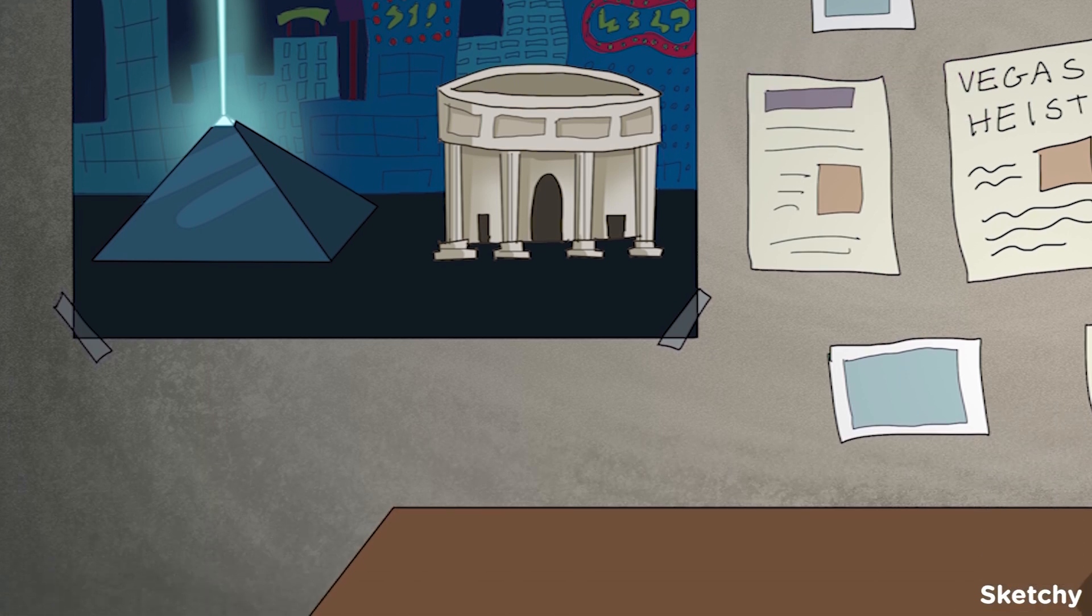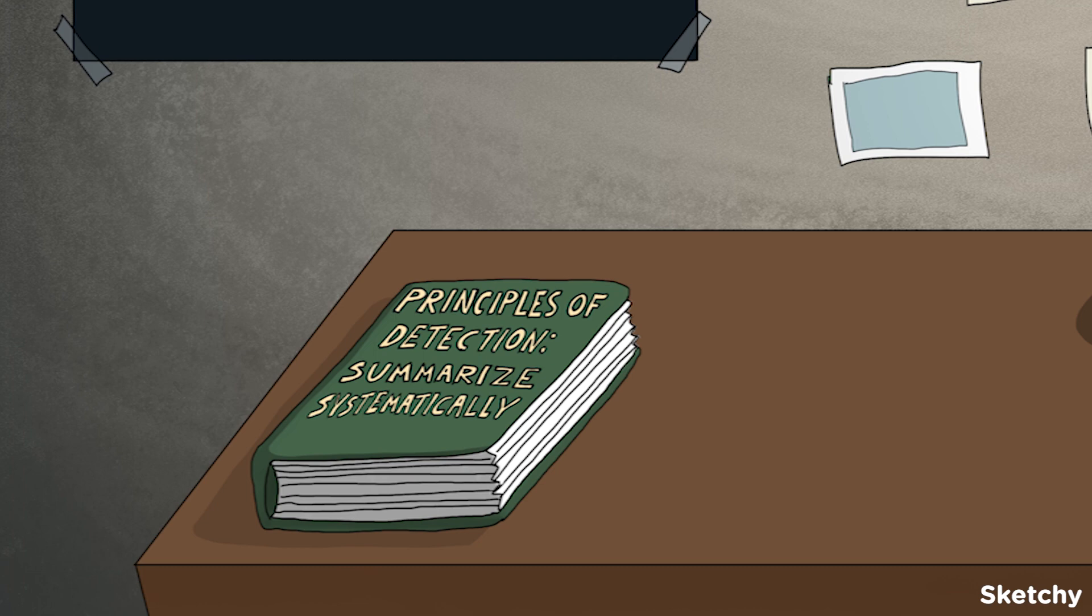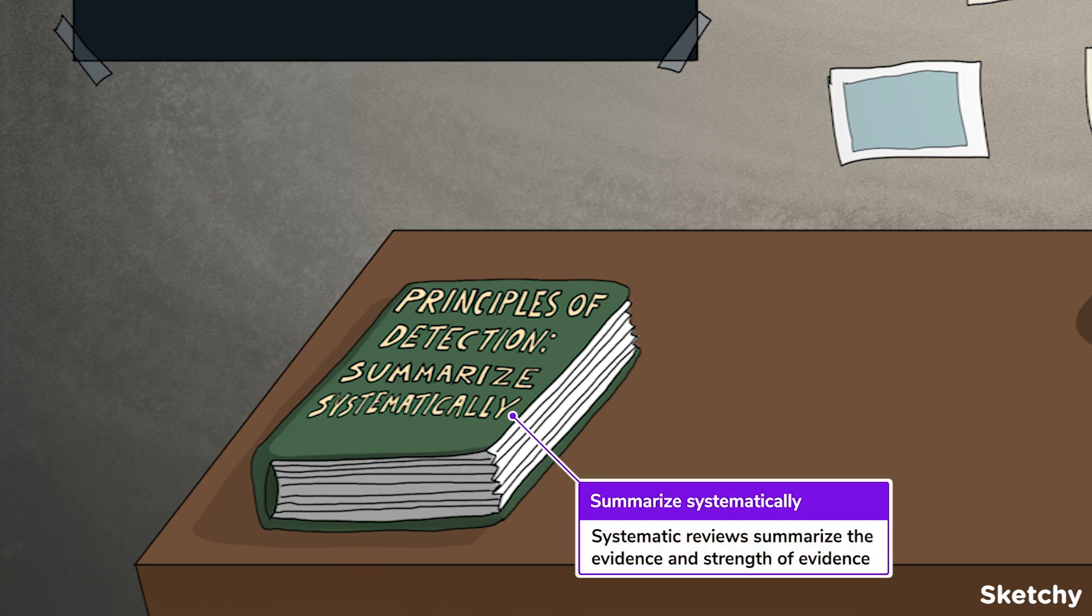Although many use the terms systematic review and meta-analysis synonymously, they're actually two different types of studies. Let's start with systematic reviews, represented here by StatLock's manual aptly called Principles of Detection. Because when tackling a big case or an important research question, you've got to approach things in a systematic and organized fashion, considering all of the available evidence.